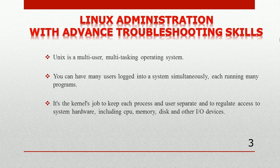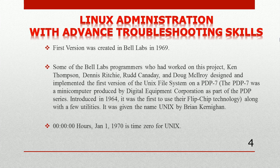Let's look at the history of UNIX. The first version was created at Bell Labs in 1969. Bell Labs programmers such as Ken Thompson and Dennis Ritchie designed and implemented the first version of UNIX on a PDP-7, which was a minicomputer produced by Digital Equipment Corporation as part of the PDP series, introduced in 1964. It was the first to use flip-chip technology, and it was given the name UNIX.